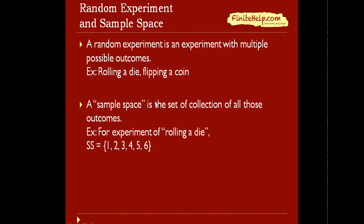A sample space is the set of collection of all the outcomes in an experiment. So here for example, for the experiment of rolling a die, the sample space would contain the elements 1, 2, 3, 4, 5, and 6, as these are all the possible outcomes from rolling a die.